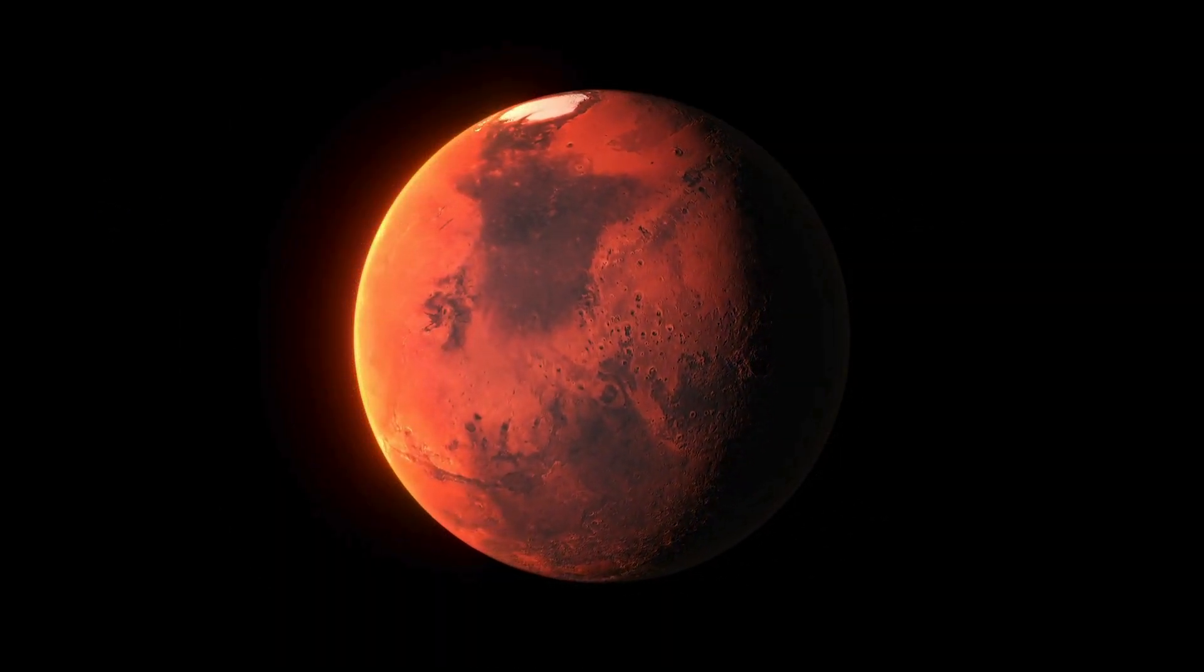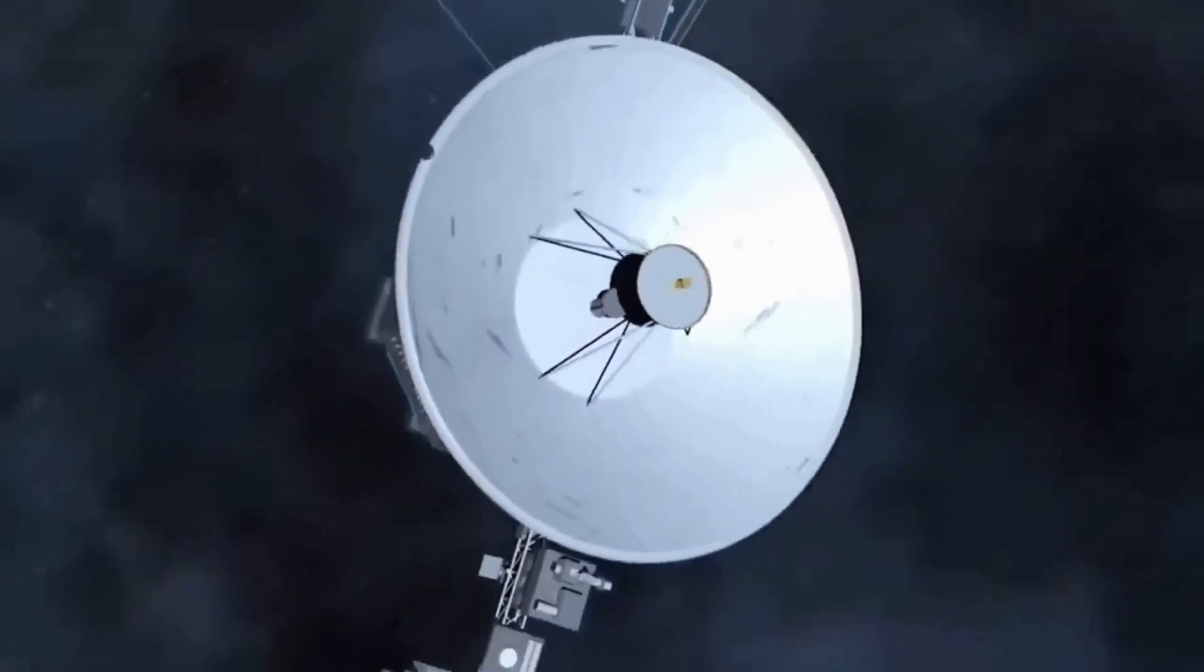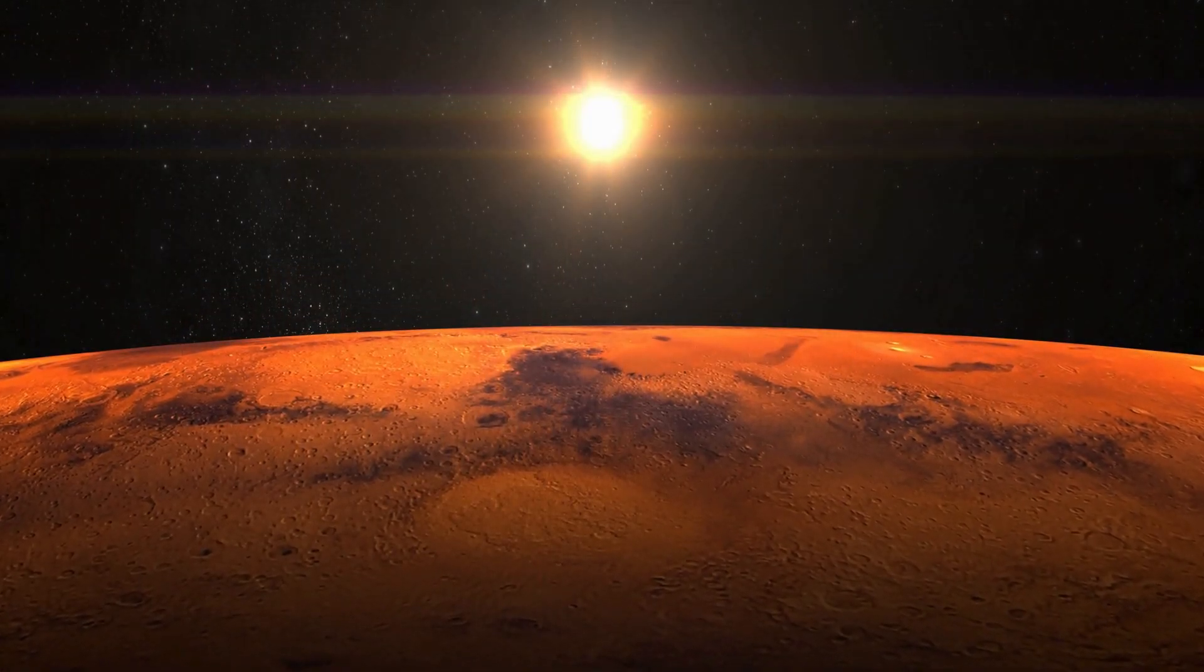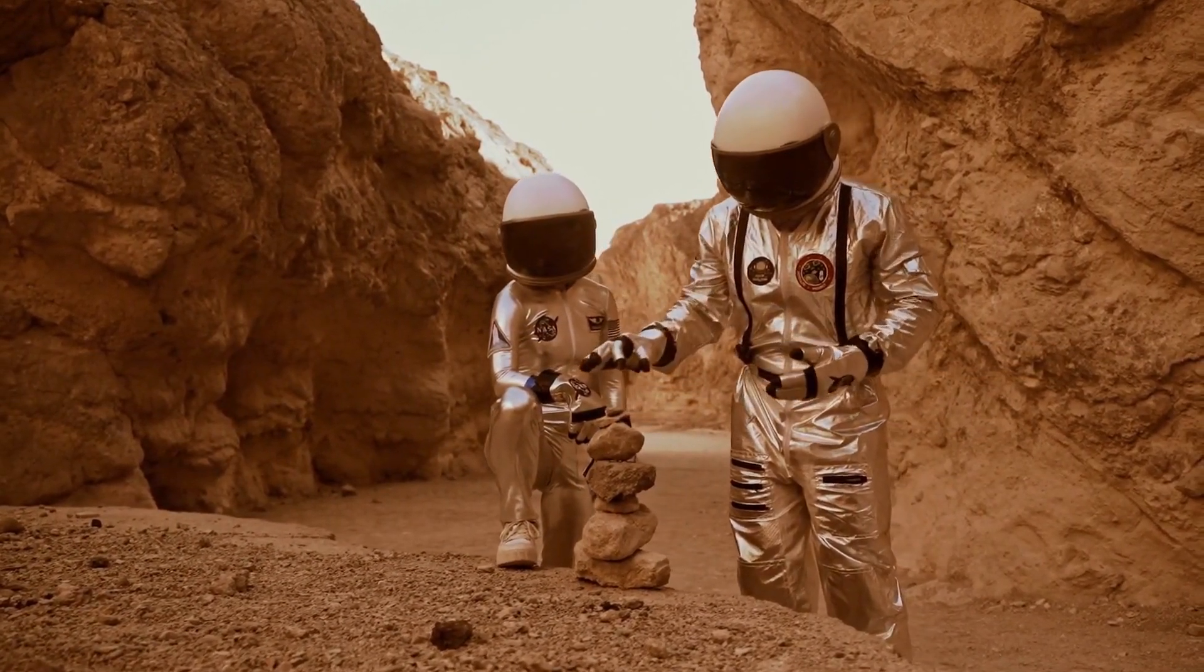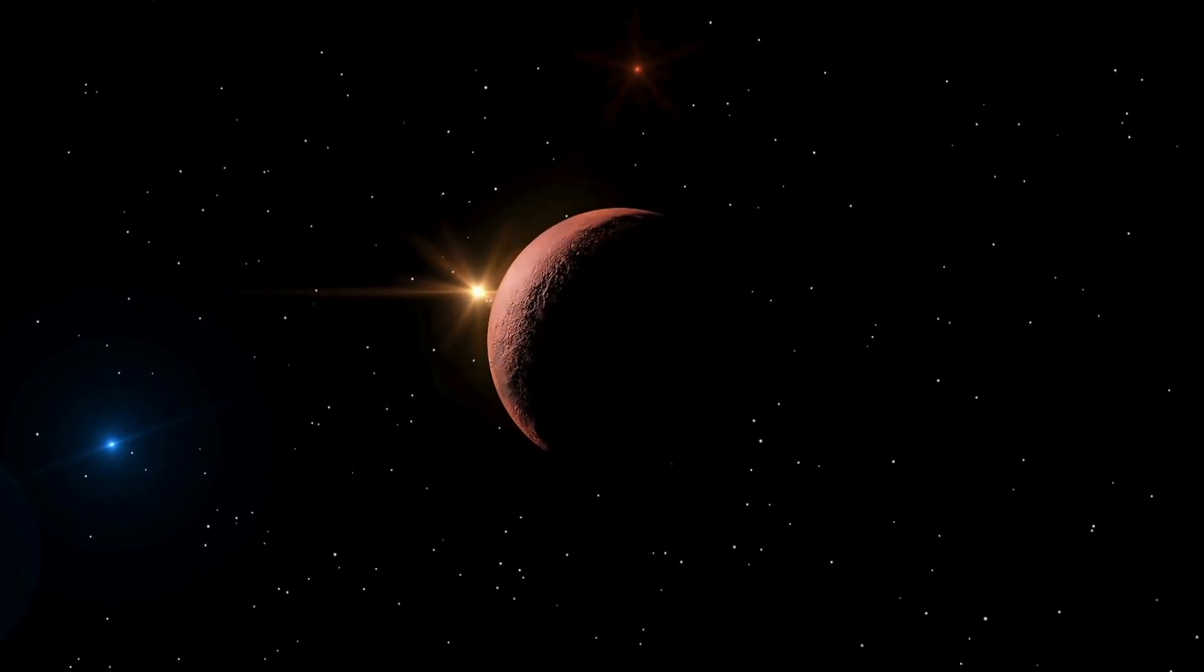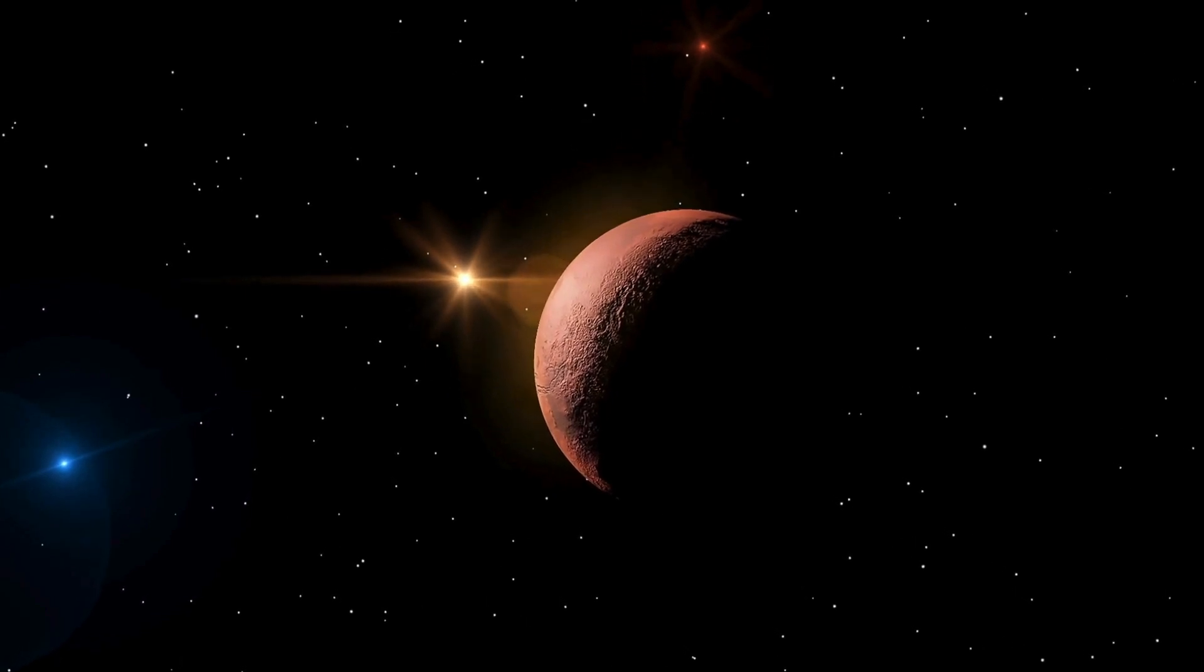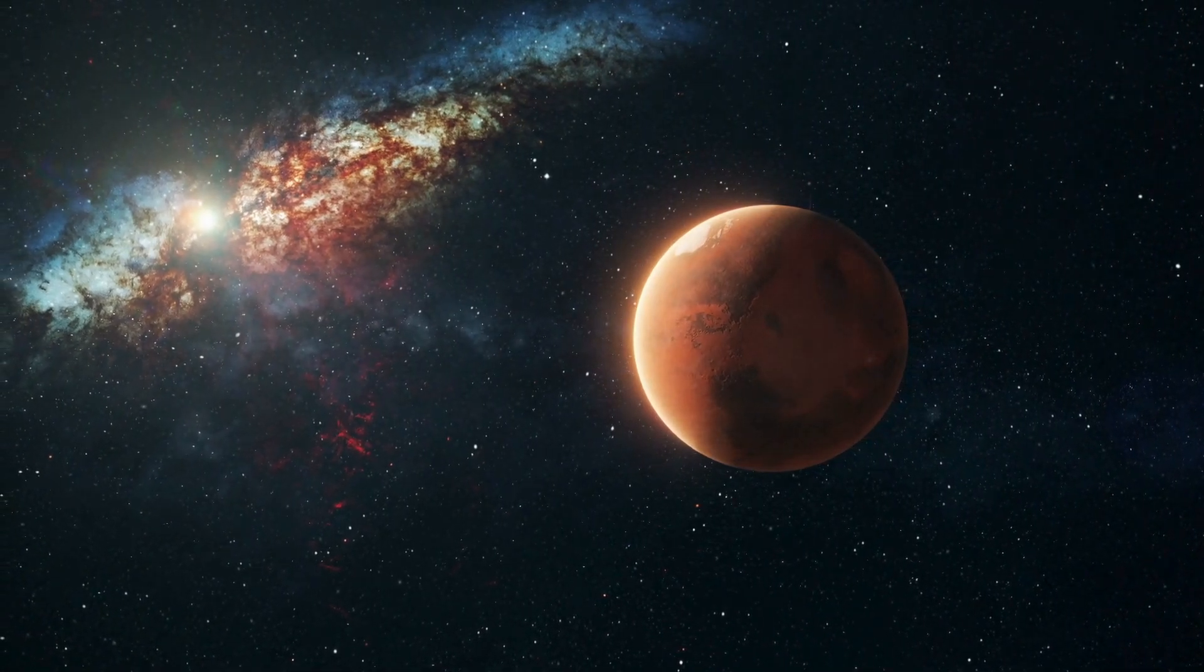A radio signal takes about 22 and a half hours to reach Voyager 1, which is over 15 billion miles, 24 billion kilometers from Earth, and another 22 and a half hours for a signal to come back to Earth. When the mission flight team heard back from the spacecraft on April 20, they saw that the modification worked. For the first time in five months, they have been able to check the health and status of the spacecraft.